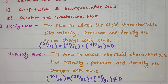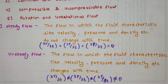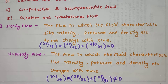All these characteristics are constant with respect to time. Unsteady flow is directly opposite to steady flow. Unsteady flow is the flow in which the fluid characteristics like velocity, pressure, and density change with respect to time, meaning they are not constant with time.